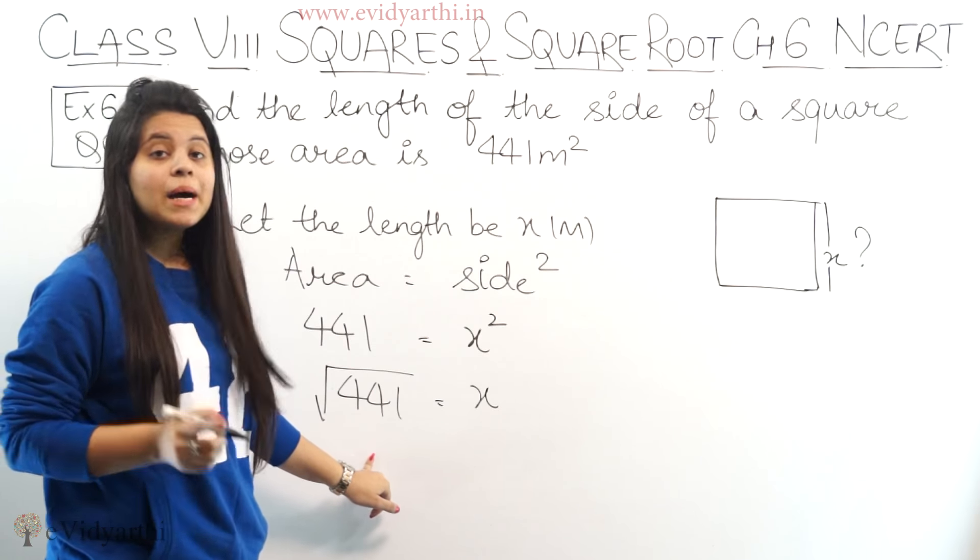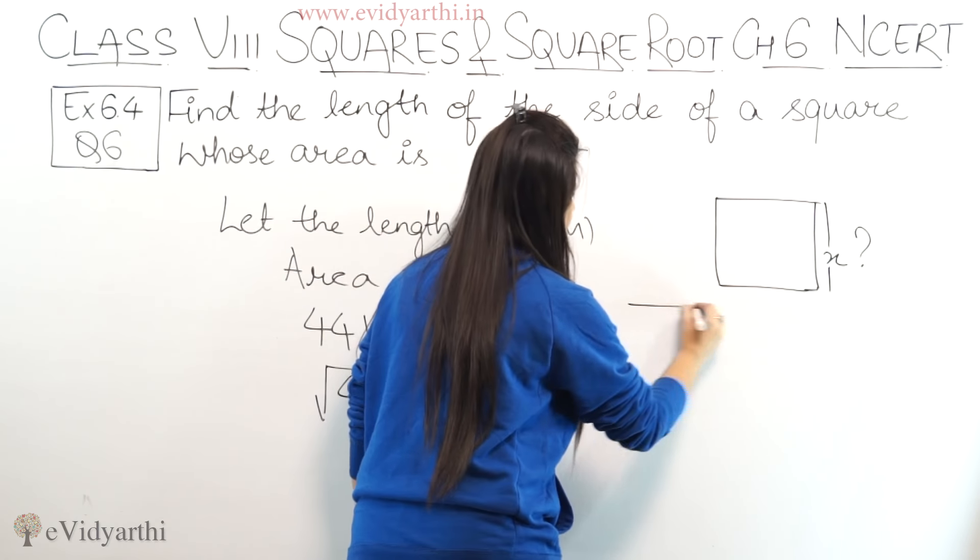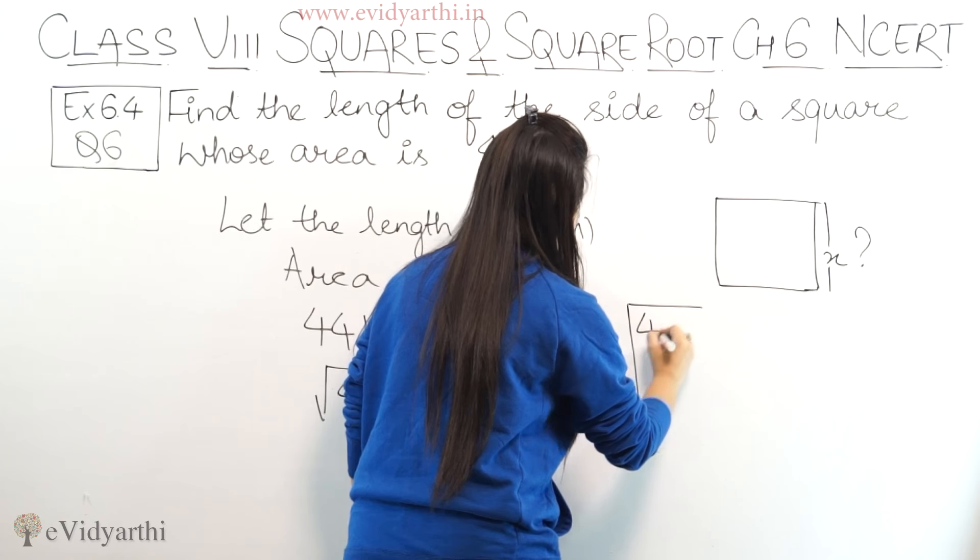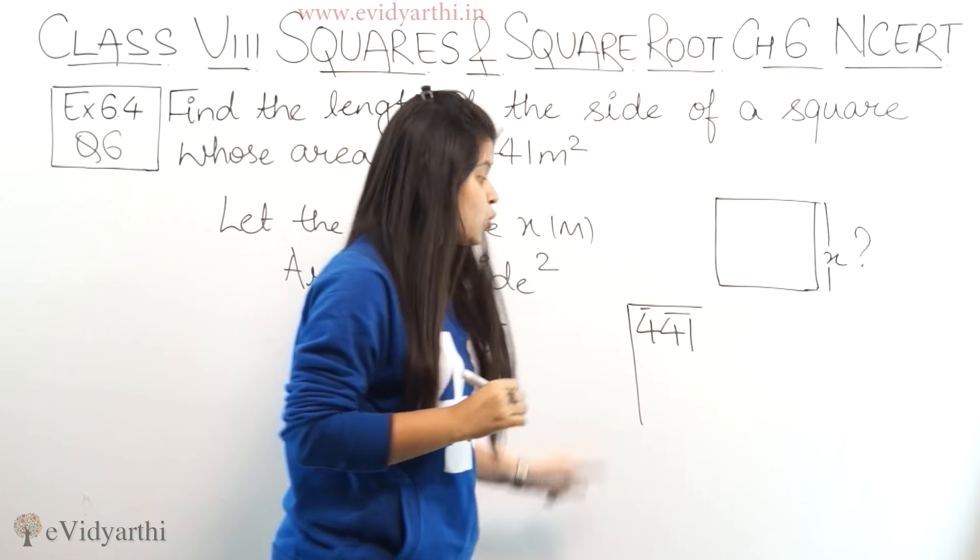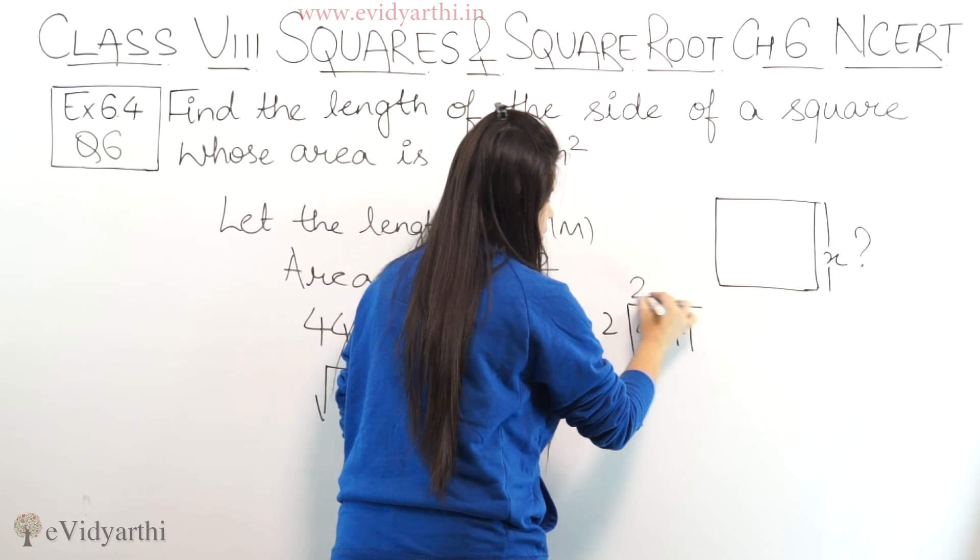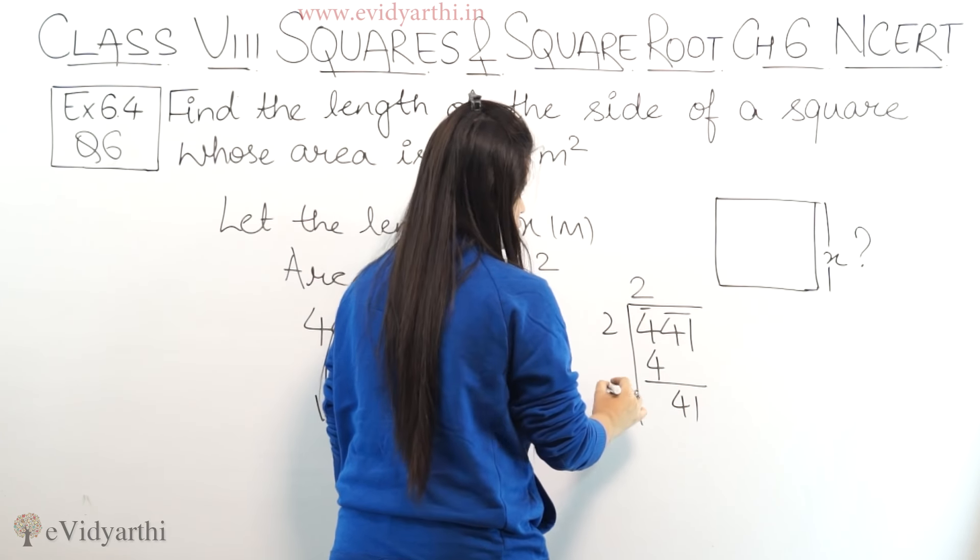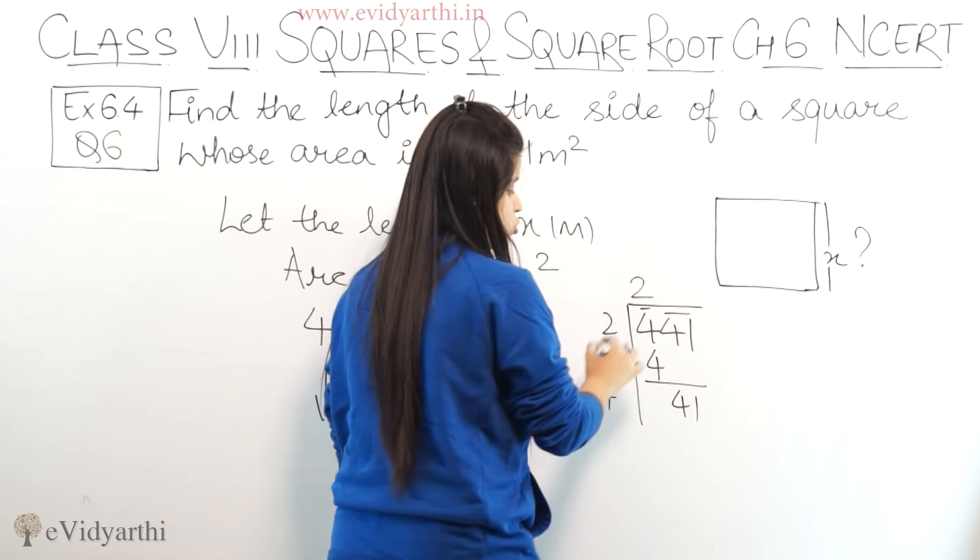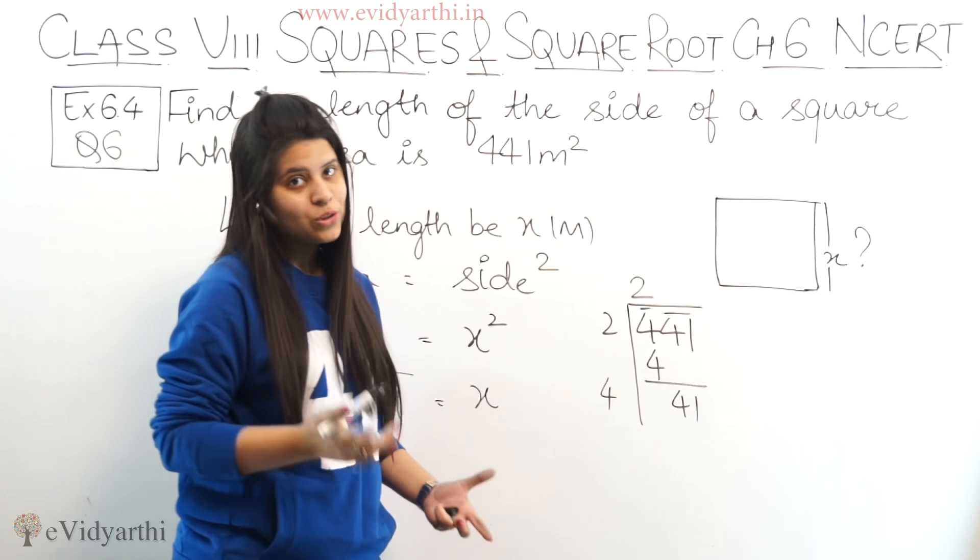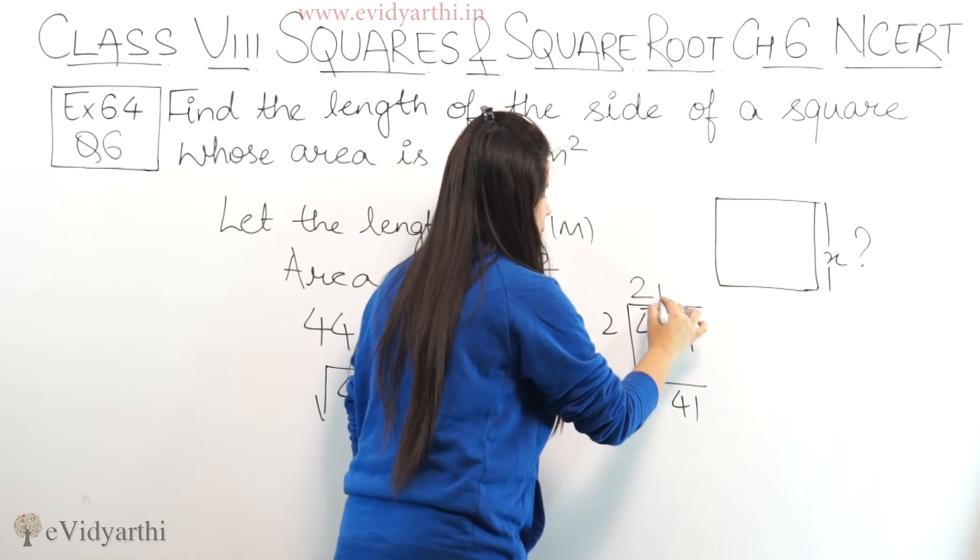So we have to find square root of 441. So 441, divide it into pairs, 2 into 2 is 4. Here we will get 41. Now 2, this will become 2 plus 2 is 4. We need 41 so we have to multiply by 1.